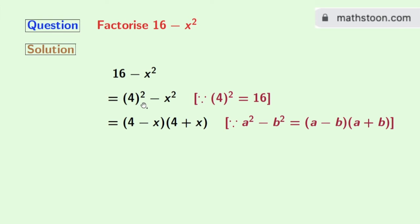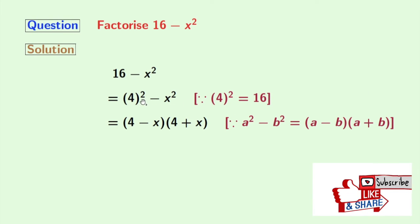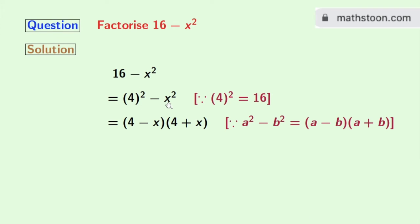Applying the formula a squared minus b squared to this expression, we get 4 squared minus x squared equals (4 minus x) times (4 plus x). As we cannot factorize further, we will stop here.